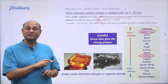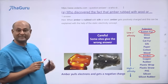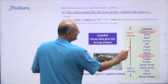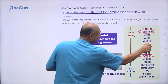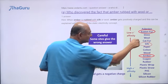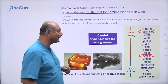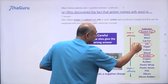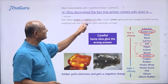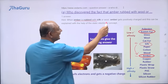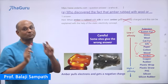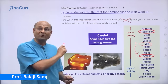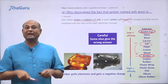Another example: a search result says amber rubbed with silk makes amber positively charged. But look at the triboelectric series — silk is higher up than amber, so amber will get negatively charged and silk will get positively charged. That statement is wrong too. Be super careful when searching online; always check whether the answers you find are correct or wrong.